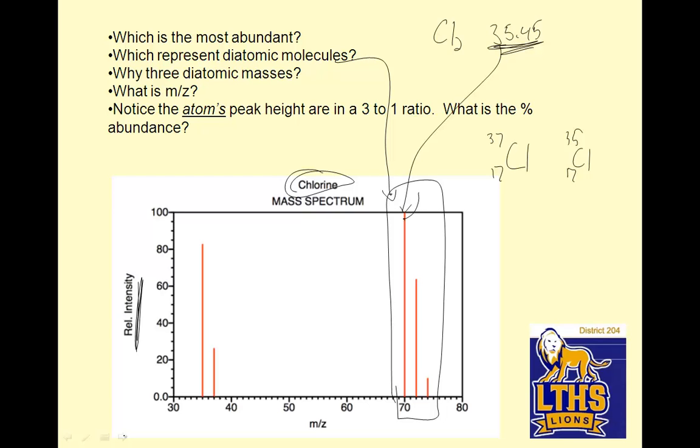Which represent diatomic molecules? These guys do. Now, why? This is weird. I've got 70, I've got 72, I don't know about you, I'm feeling 72. Sorry, and 74. So how do I get these? So if I've got 35, this one right here must be 35 plus 35. And this is the most abundant, so it makes sense that that would be the next most abundant. Then right here, 72 could be 35 plus 37. I don't know about you, I'm feeling 72.